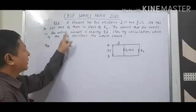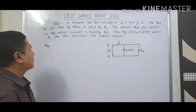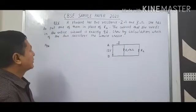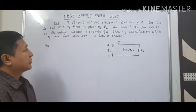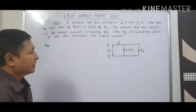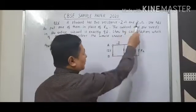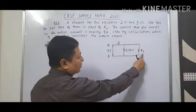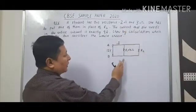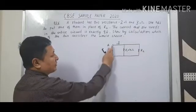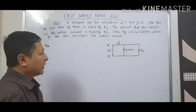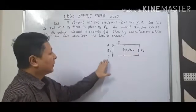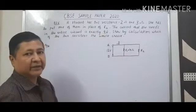She has to put one of them in the place of R2. The current she needs in the entire circuit is exactly 9 ampere. She can choose either 2 ohm or 3 ohm for R2. The potential difference between A and D is given as 12 volt. R1 and R2 are connected in parallel, and the current required is 9 ampere.